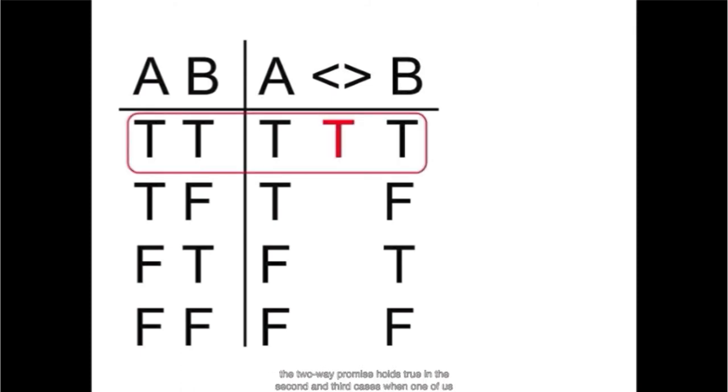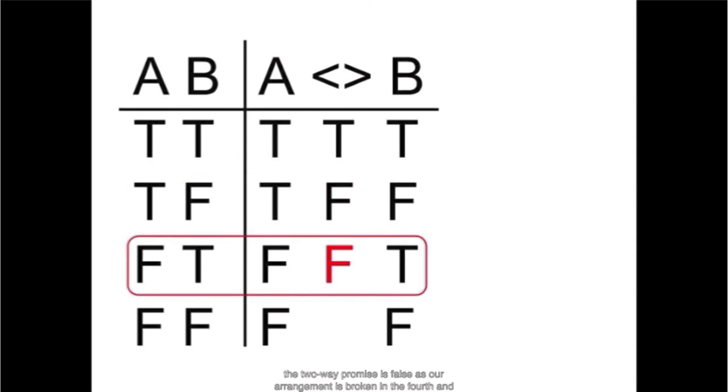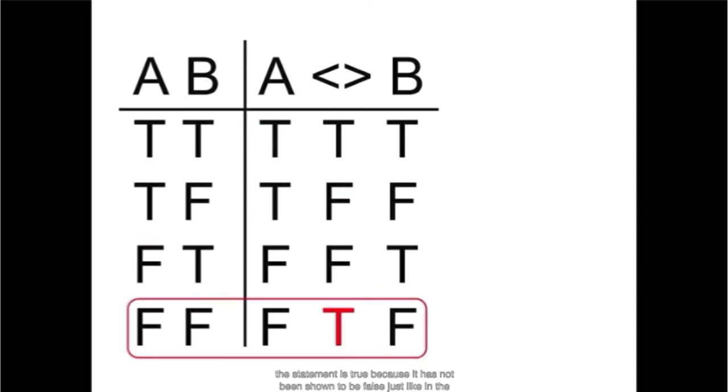In the second and third cases, when one of us gives the other something but does not receive what they were promised in return, the two-way promise is false as our arrangement is broken. In the fourth and final case, our arrangement is unbroken if neither gives the other anything, and the statement is true because it has not been shown to be false.